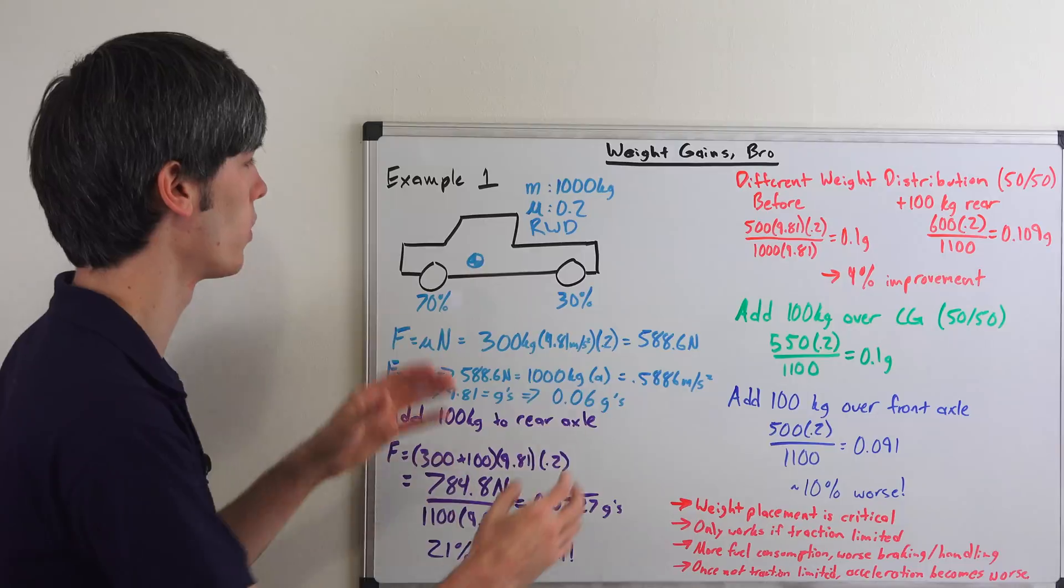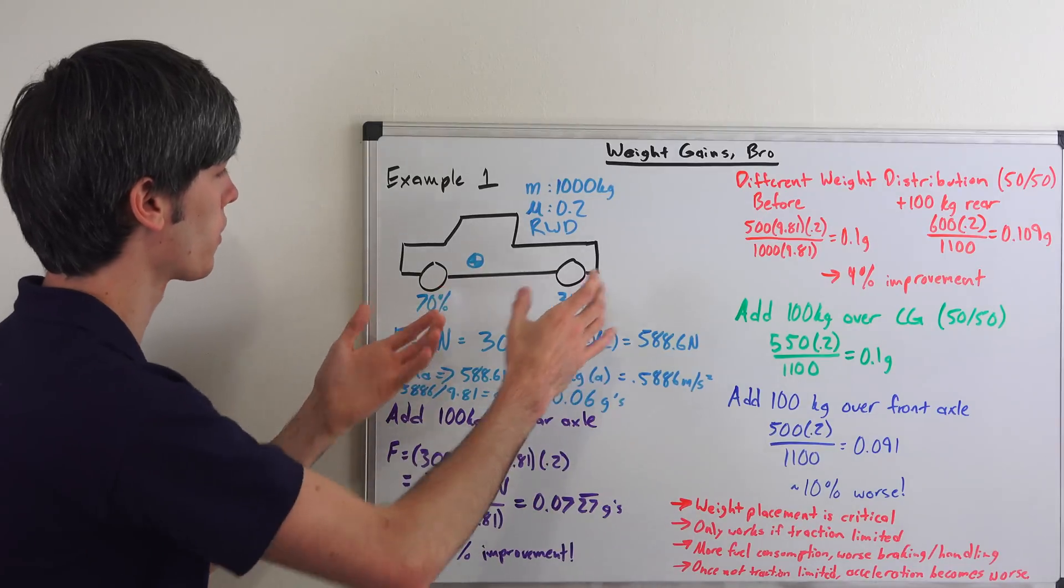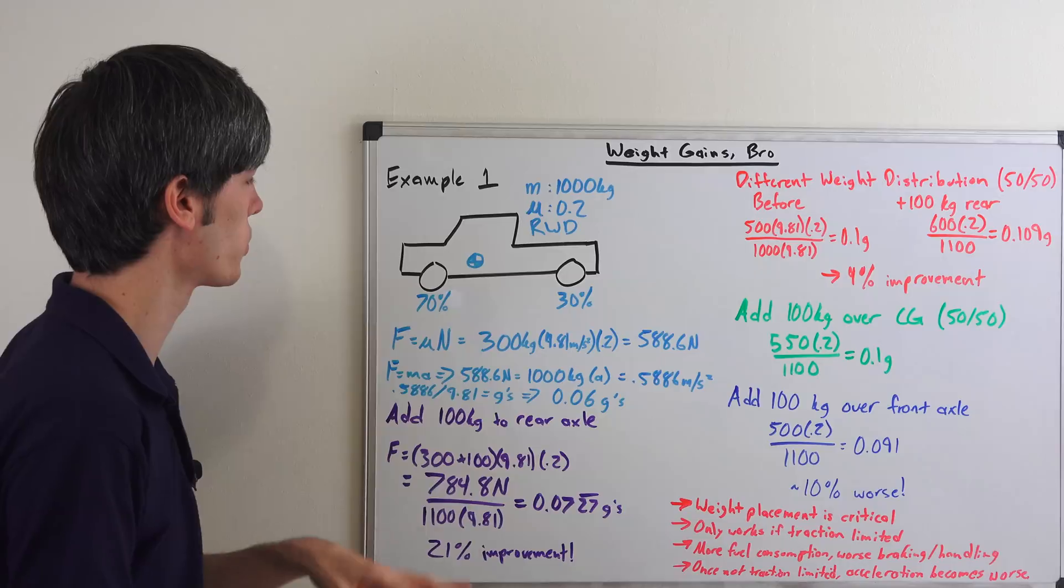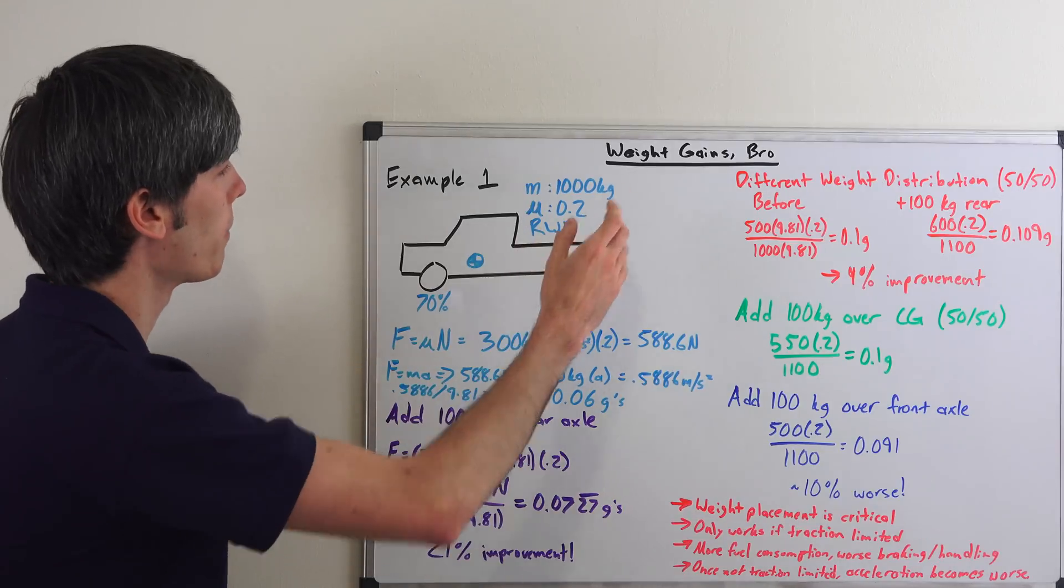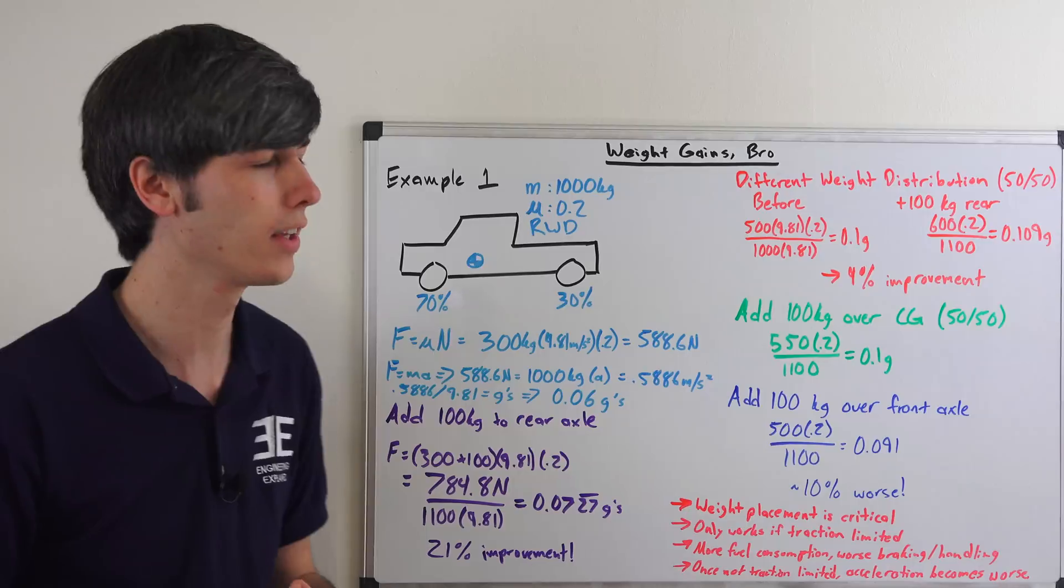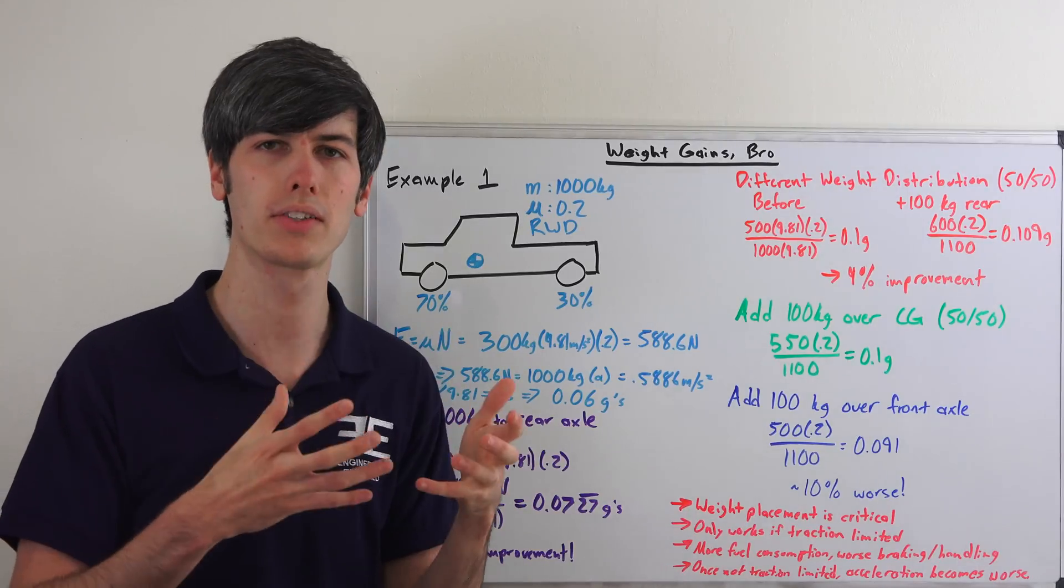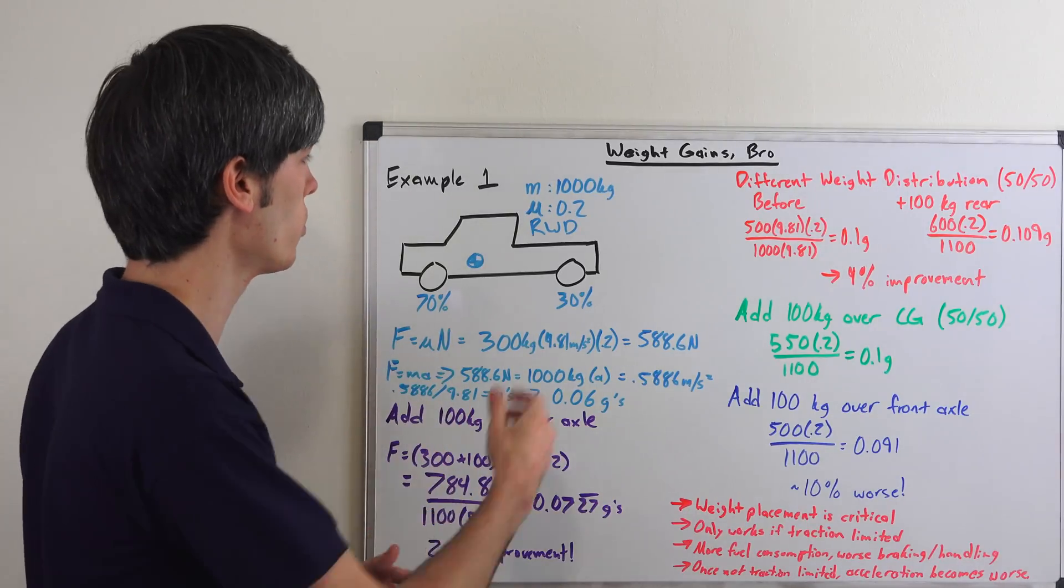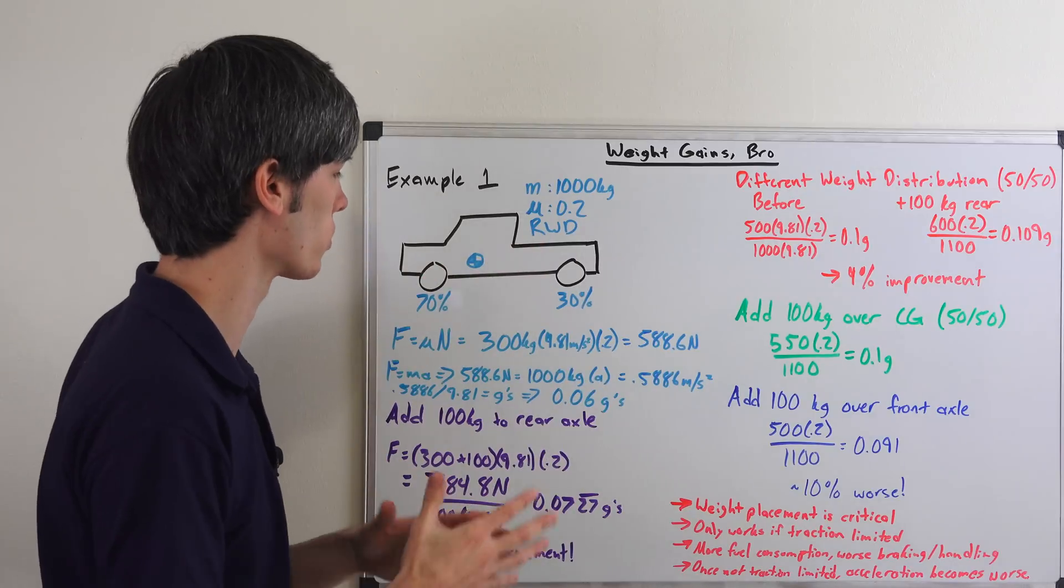So here we have our example. We've got a truck with a 70-30 weight distribution. The weight distribution is very important and we have a mass of a thousand kilograms and the surface conditions are such that we're just going to say it's snowy, it's icy and so the coefficient of friction between the tire and the road is 0.2 and of course the vehicle is rear wheel drive.